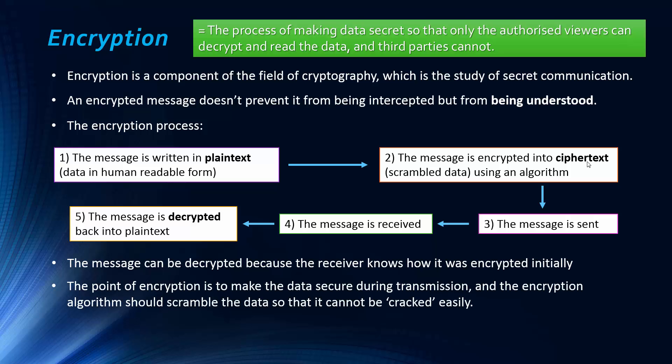The point of encryption is to make the data secure during transmission. The algorithm should scramble the data enough so that it cannot be cracked easily, so that people can't work out what has happened and reverse the process.